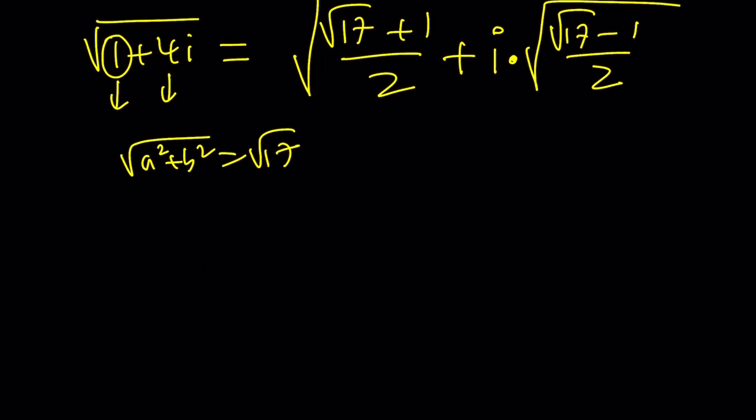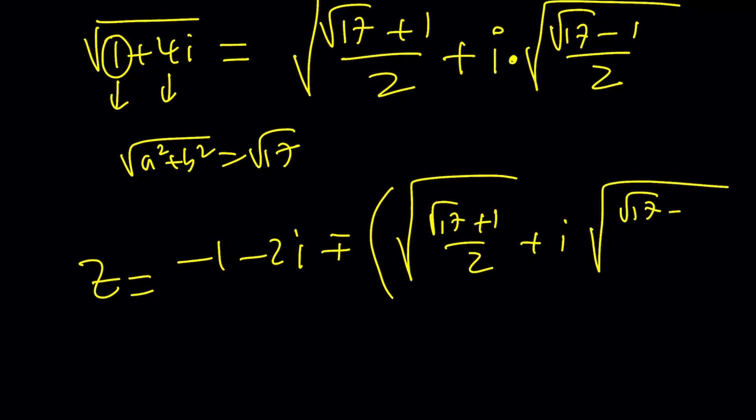So now z becomes negative 1 minus 2i plus or minus this square root thing, which is the square root of square root of something. We'll talk about denesting in a bit, but let's first do the replacements. This is going to be a very radical answer. By the way, the two at the bottom comes from the quadratic formula. These twos come from the formula for the square roots of a complex number. Make sure to distinguish because this can be very confusing.